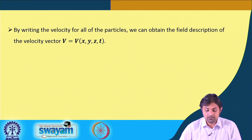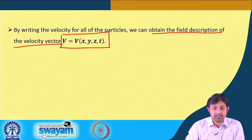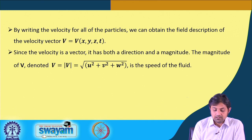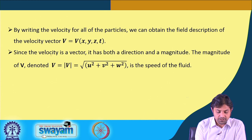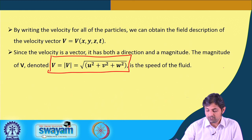By writing the velocity of all the particles in the system, we can obtain the field description of the velocity vector V as a function of x, y, z, and t. Since the velocity is a vector, it has both a direction and a magnitude. The magnitude of V is given by |V| = √(u² + v² + w²), which is simply the speed of the fluid.